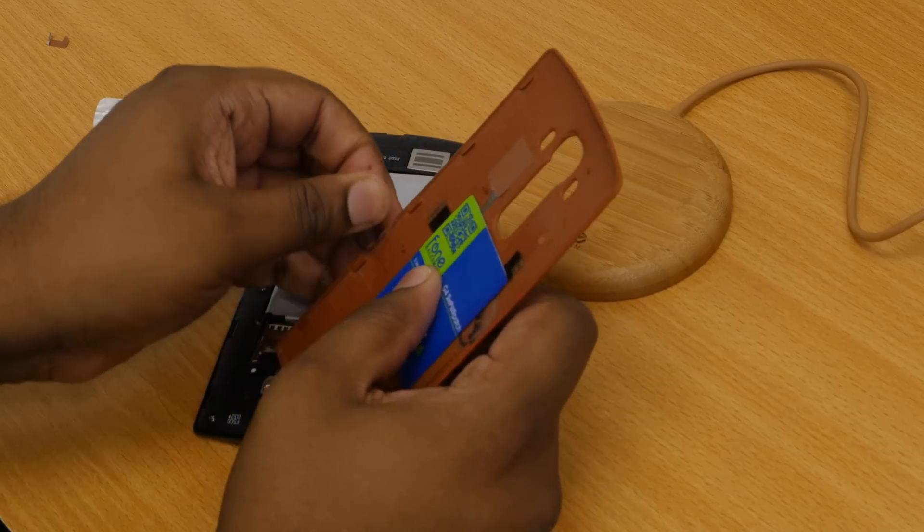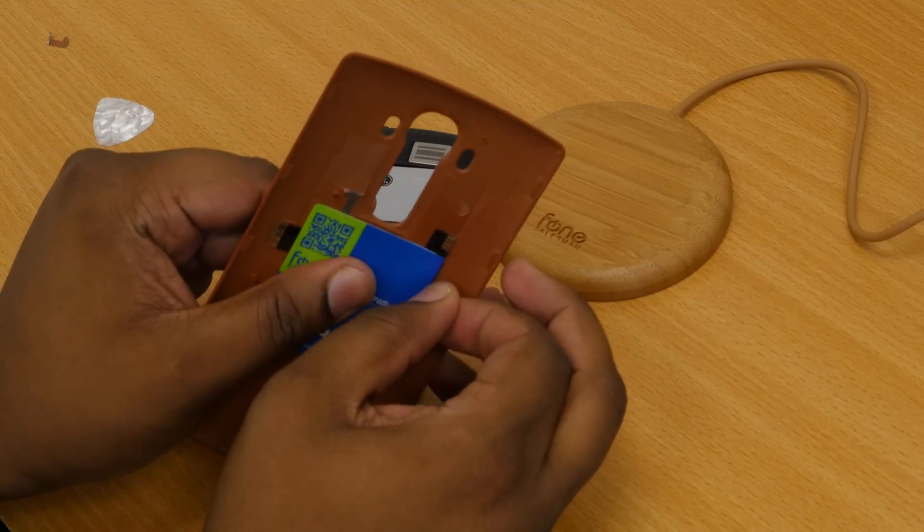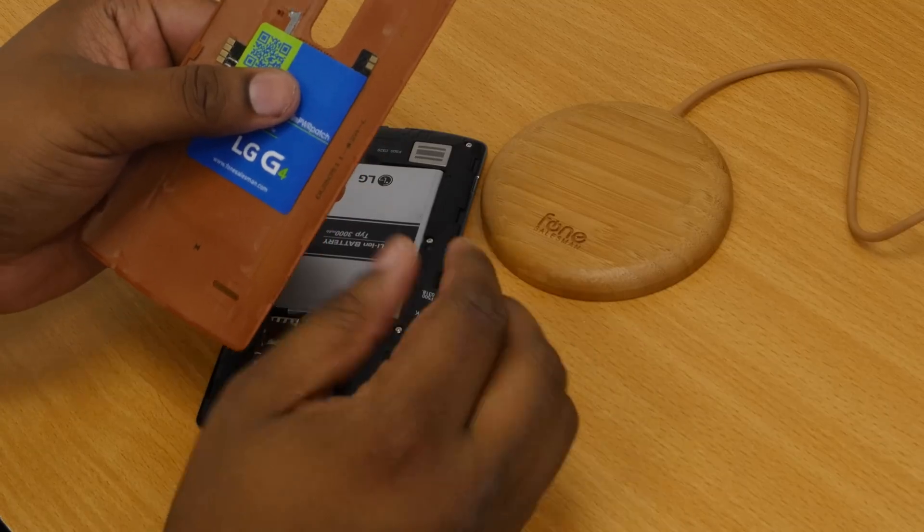To conclude the installation, simply take the Phone Salesman alignment stickers off while keeping the G4 Slim Power Patch secure.